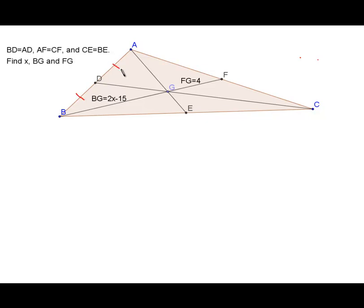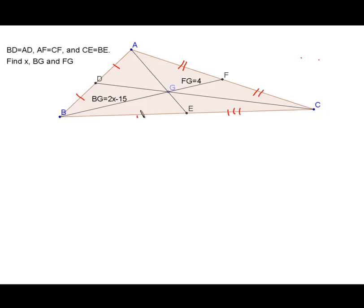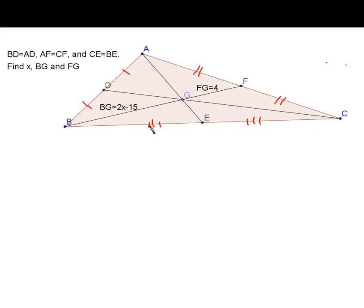We're told that BD is congruent to AD, so we'll mark that on here. That means that D is a midpoint. Also, AF and CF are congruent, so F must be a midpoint there. And CE and BE are congruent, so that also makes E a midpoint.